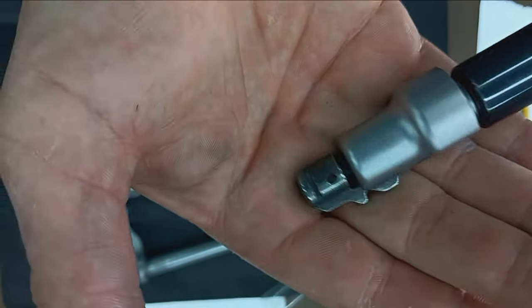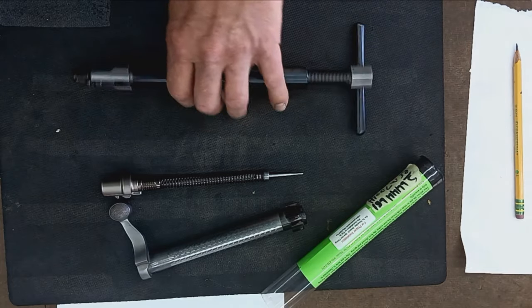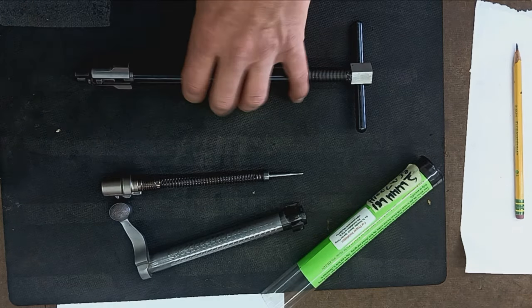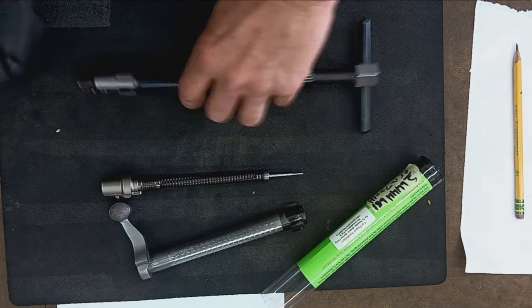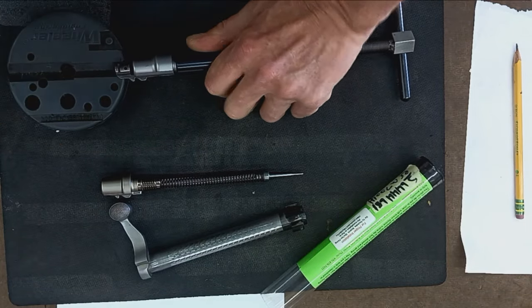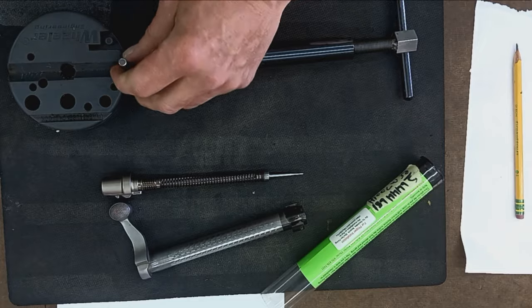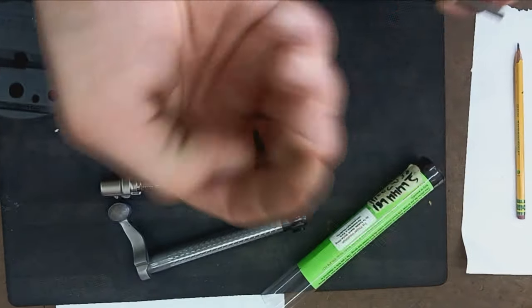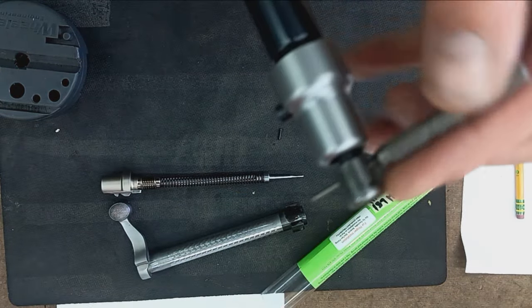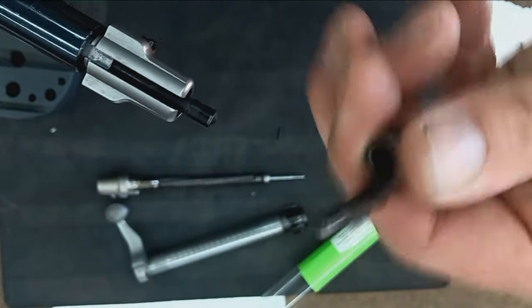There's just a little cross pin in the cocking piece that we got to knock out. It's similar to a standard 700 firing pin assembly with a few minor differences. Let's get a punch out here. That pin is not tight, so just a little steel cross pin there that goes through the hole in the cocking piece.